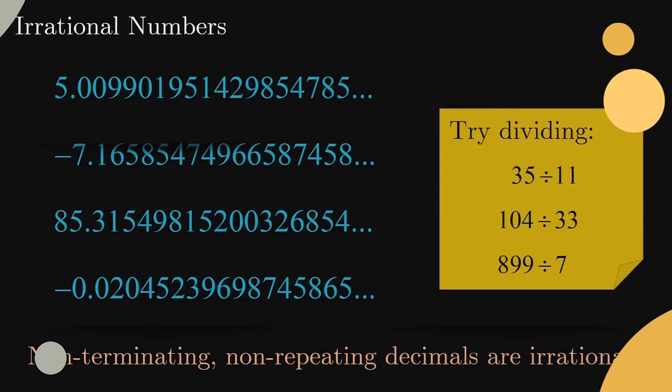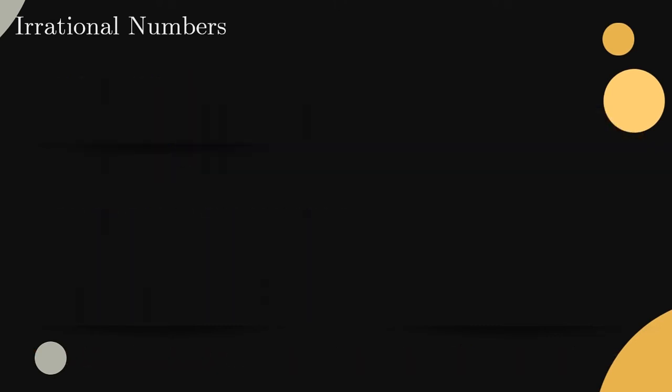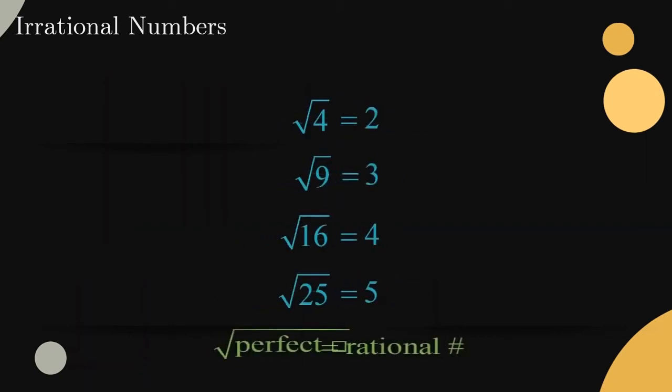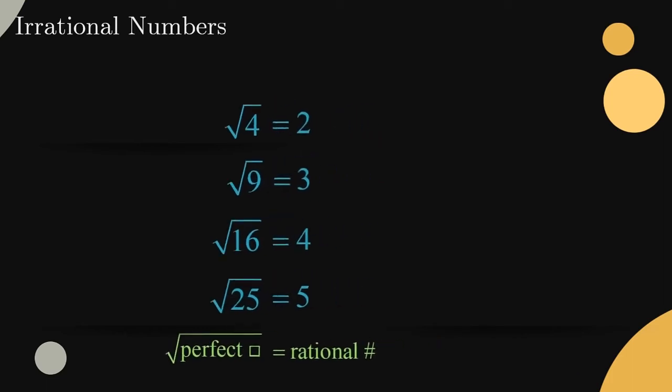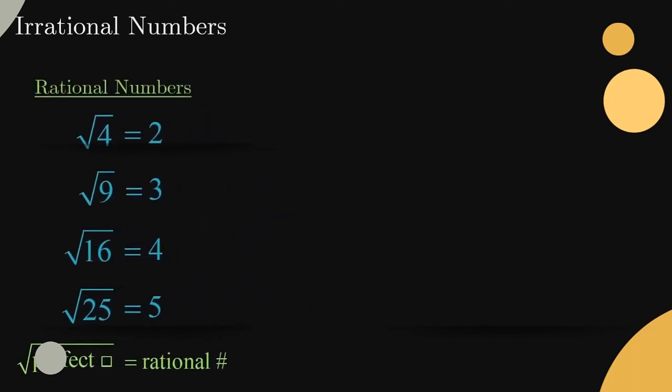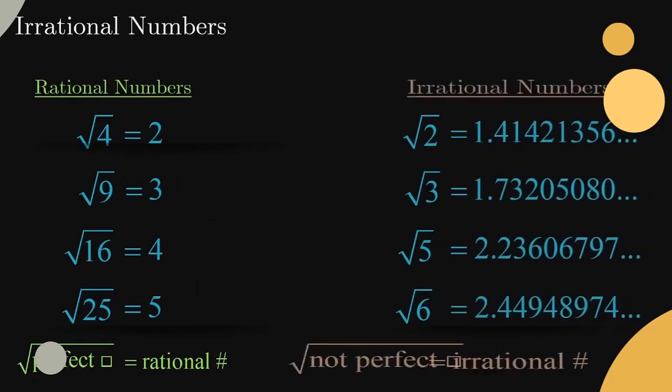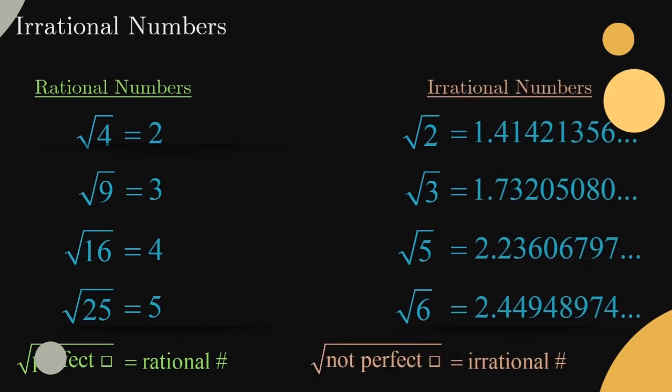Many square roots are also irrational. Obviously, square roots of perfect squares like 4, 9, 16, and 25 are whole numbers, which are indeed rational numbers. But if we square root a whole number that is not a perfect square, the result is irrational. To see why, check out the video dedicated to that topic.